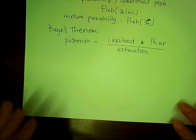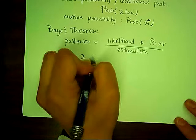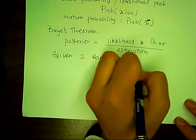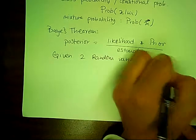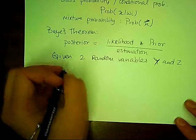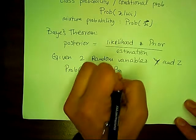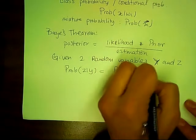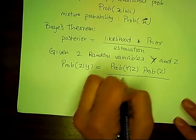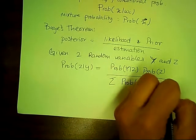For the discrete case, given two random variables Y and Z, the probability of Z given Y equals the probability of Y given Z times the probability of Z, or the prior of Z, over the summation of the probability of Y given Z times the prior of Z.